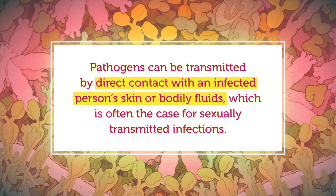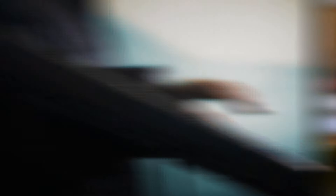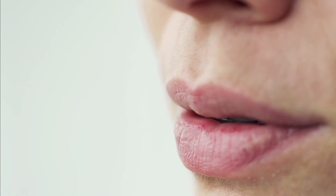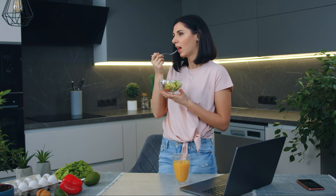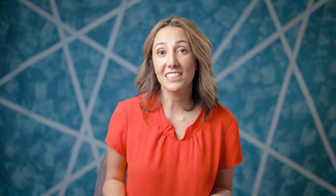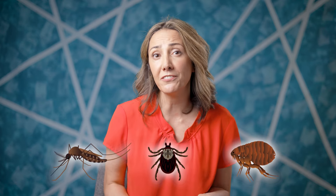Pathogens can be transmitted by direct contact with an infected person's skin or bodily fluids, which is often the case for sexually transmitted infections. They can also be picked up from the surfaces we touch with our hands and enter our bodies when we later touch our eyes, our mouth, or our nose. Or, an infected person might release droplets containing pathogens when they talk, cough, or sneeze, which then get inhaled by someone else. Some pathogens find their way into our food and water, which we unknowingly put straight into our mouths. Others, like malaria, are carried by animals known as vectors — typically blood-sucking arthropods like mosquitoes, ticks, and fleas — which, when they bite us to feed, transmit pathogens directly into our bloodstream.